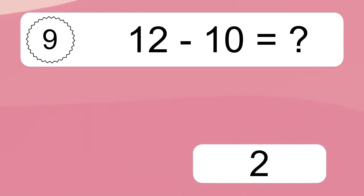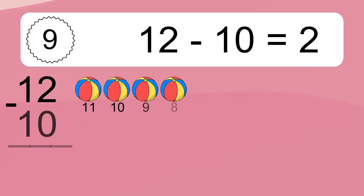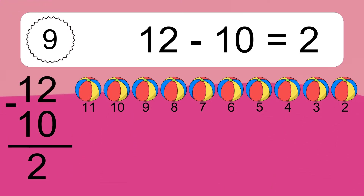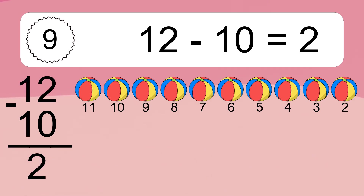12 minus 10 equals what? 12 minus 10 equals 2. Let's count it: 11, 10, 9, 8, 7, 6, 5, 4, 3, 2.